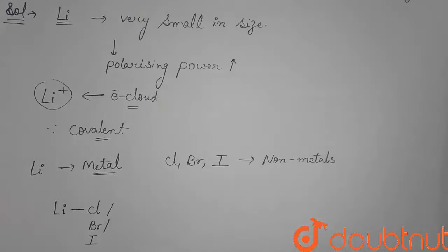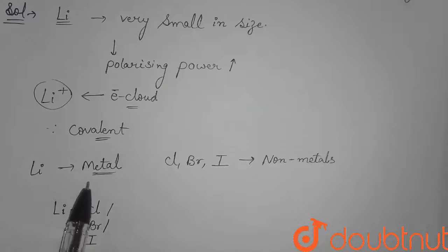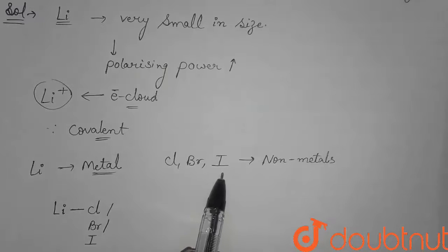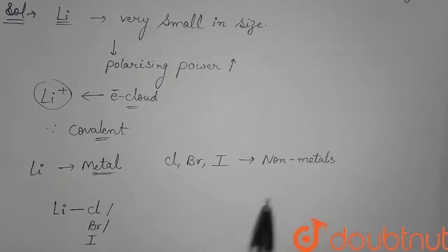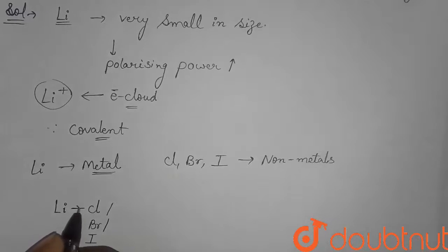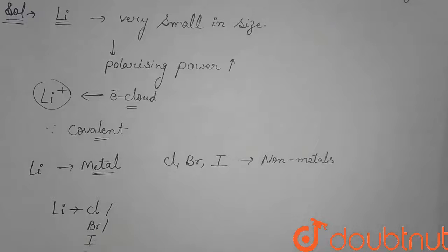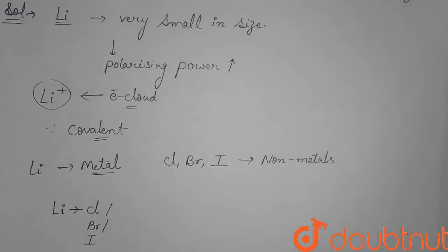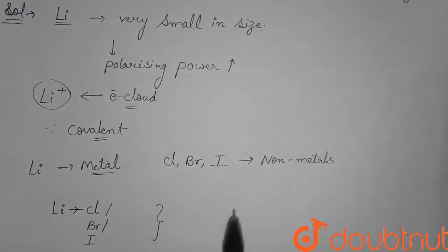Because lithium is a metal, it tries to lose electrons, and chloride, bromide and iodide are non-metals, so they try to gain electrons. Therefore, electrons move from the lithium element to chlorine, bromine and iodine, forming lithium chloride, lithium bromide or lithium iodide. Therefore, this is the reason why it is ionic — because one is a metal and the others are non-metals.